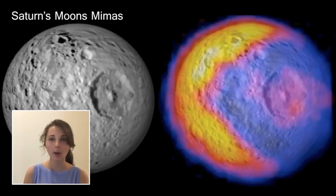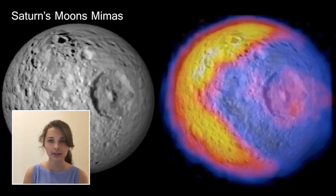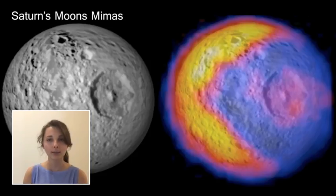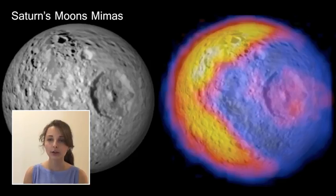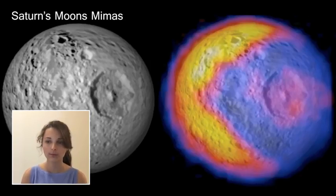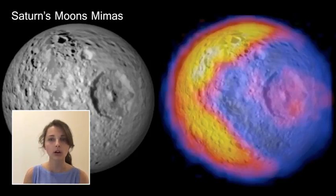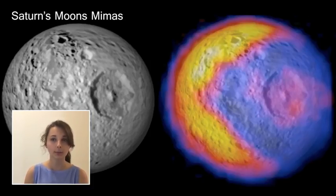Mimas is a moon of Saturn and is the smallest astronomical body known to be rounded in shape because of its self-gravitation. Mimas has a low density of only 1.15 grams per centimeter cubed, indicating it is composed mostly of water ice with only a small amount of rock. Mimas has a large crater, Herschel, associated with cracking that spreads across the entire face of the moon. Mimas has an irregular wobble that may indicate a non-spherical core or a global subsurface ocean, and thermal imaging has revealed irregular heating that may also indicate a subsurface ocean.